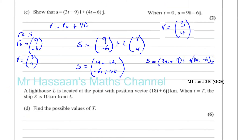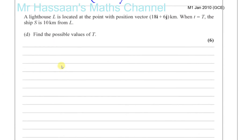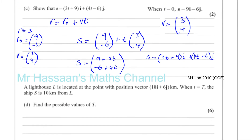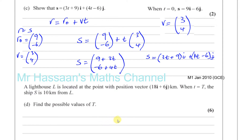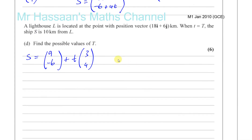Now for part D: a lighthouse L is located at the point with position vector 18I plus 6J. When T equals capital T the ship is 10 kilometers from L — find the possible values of the time. The position vector of the lighthouse, which is a fixed position, is 18I plus 6J.